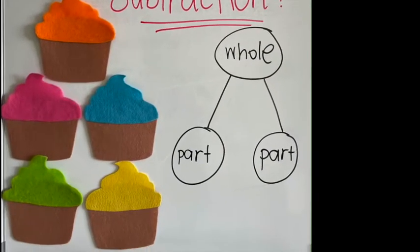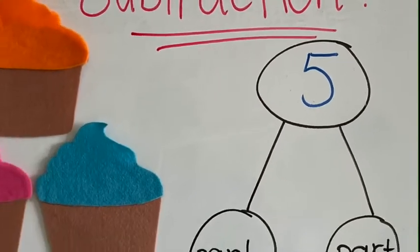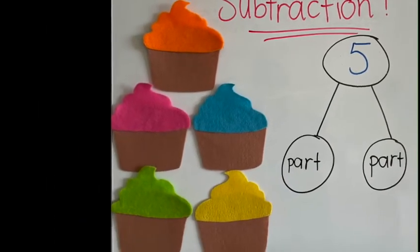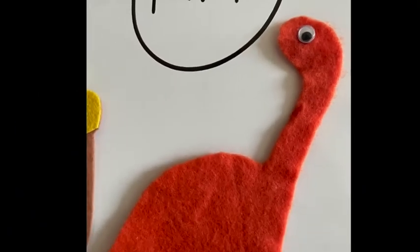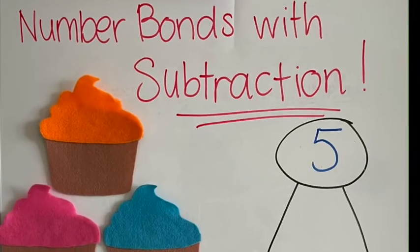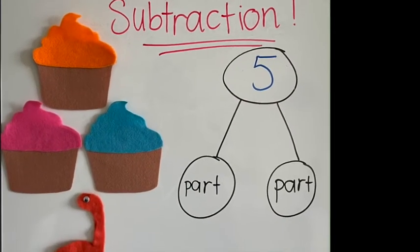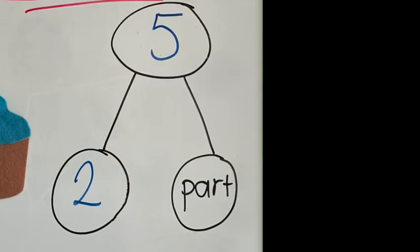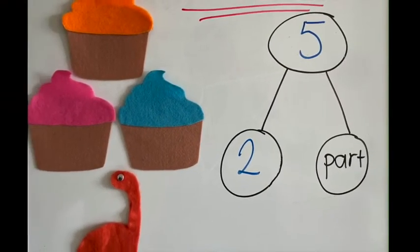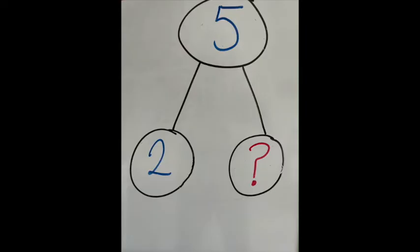Five is the whole number. Along comes—no, I'm just kidding—he's a cute one, and he eats up two cupcakes. So two is a part of the number bond and we've written it in there. So here we have a missing part to our number bond.